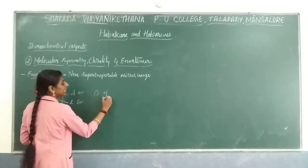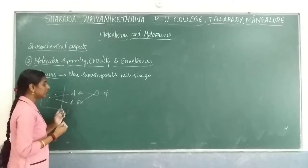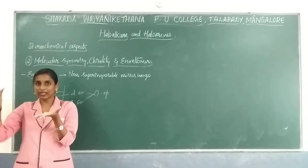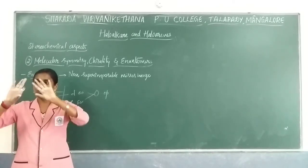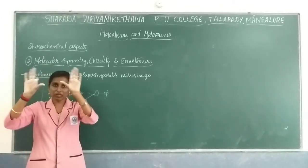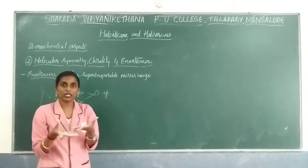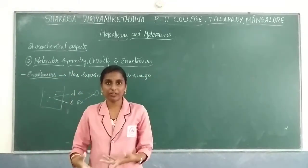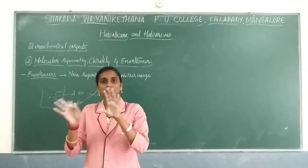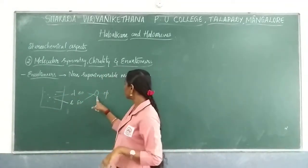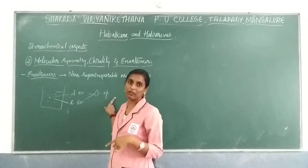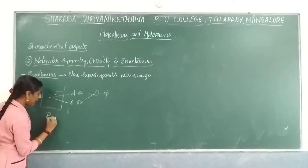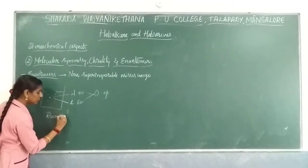The optical activity in that case will be zero. The dextrorotation takes place with 50% and levorotation takes place with 50%, so both get cancelled because they are in opposite directions. This kind of mixture will be considered as a racemic mixture.